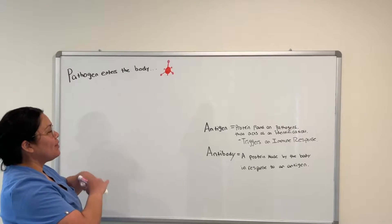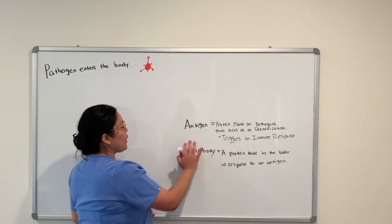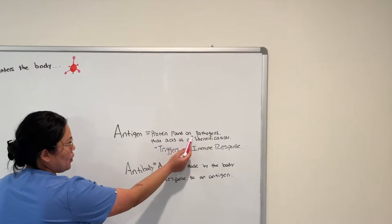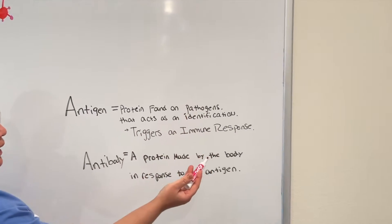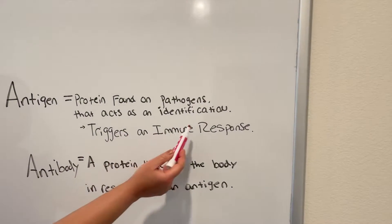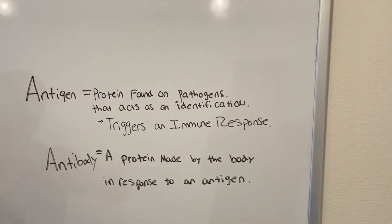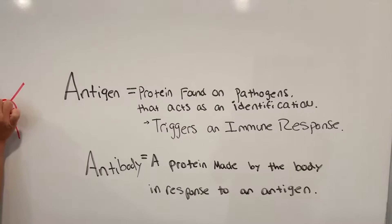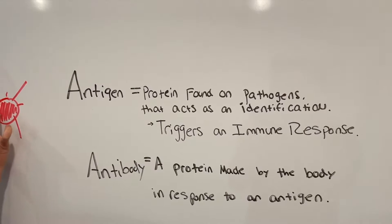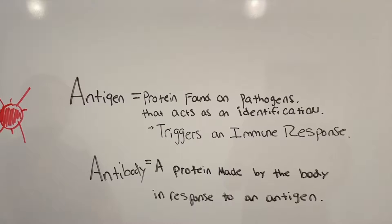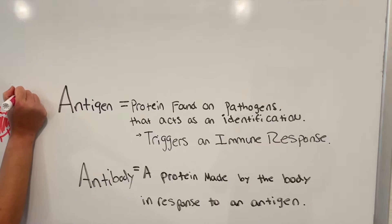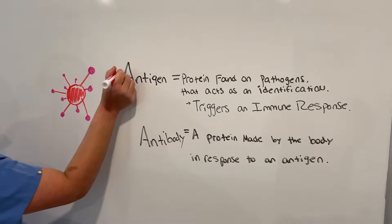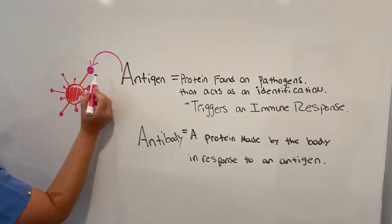Before we start the immune system, there are two important vocabulary words that you're going to hear a lot, so you're going to need to know them. An antigen is a protein found on pathogens that acts as an identification. An antigen always triggers an immune response. So let me show you exactly where you find these antigens. Let's just say this is a pathogen. On the surface membrane of the pathogen, you're going to have these little identification tags — these are your antigens.